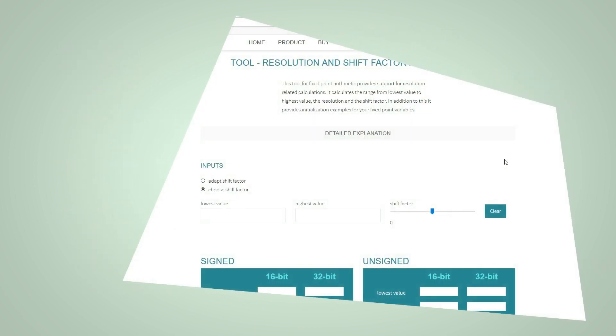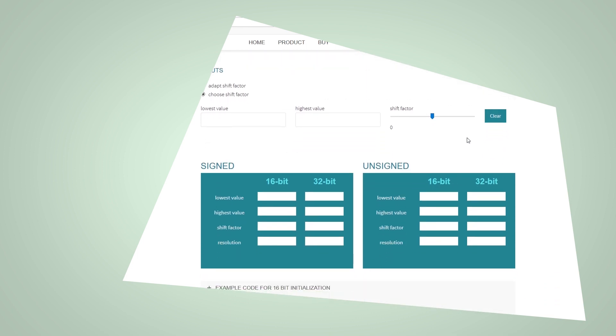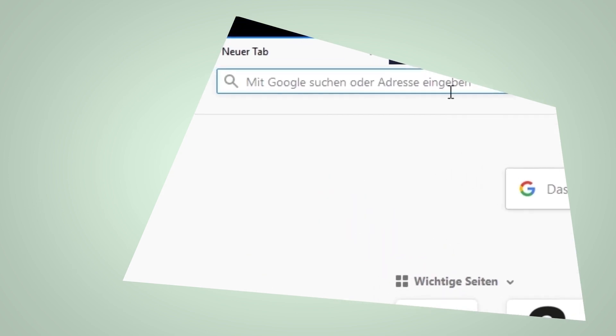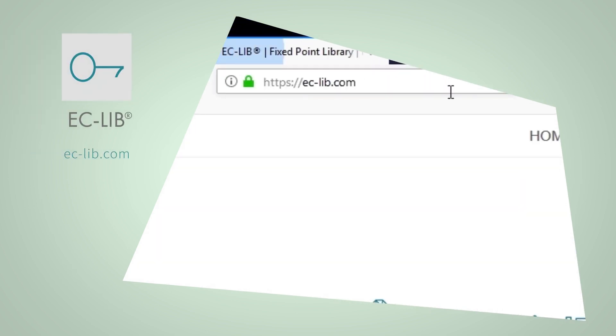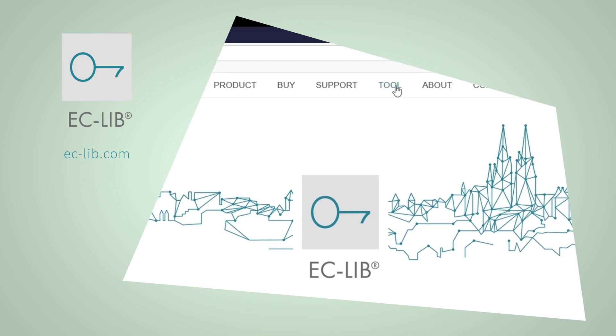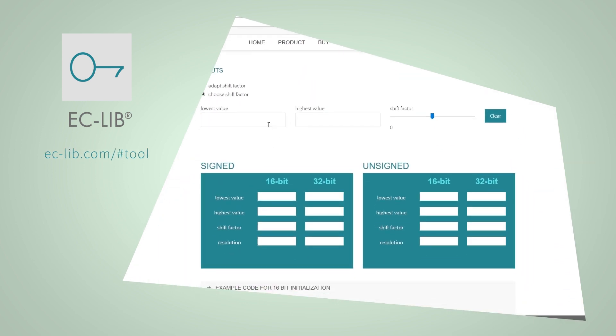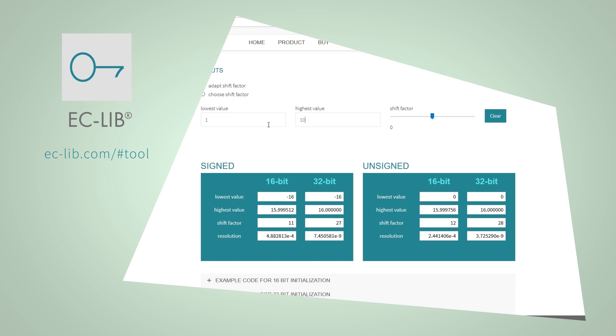In order to obtain an optimal resolution for a defined value range, we recommend the use of the tool for calculating the shift factor. You can find it on eclib.com under tool. If you fill in lowest and highest possible value for your input signal, it automatically calculates the optimal shift factor for the value range and the associated resolution.